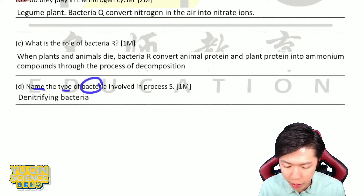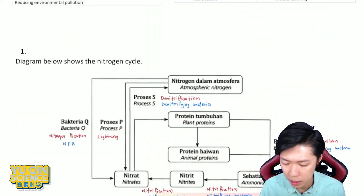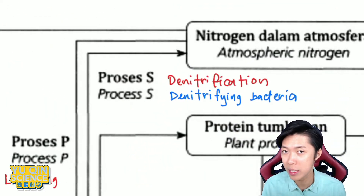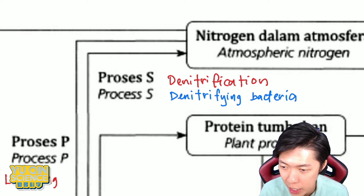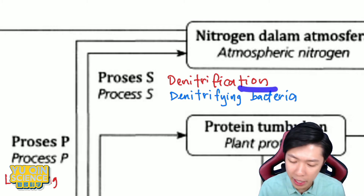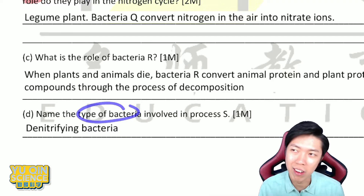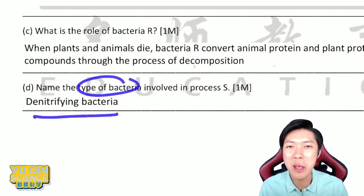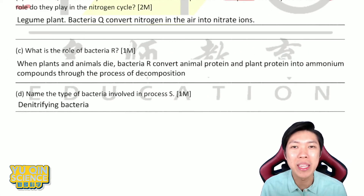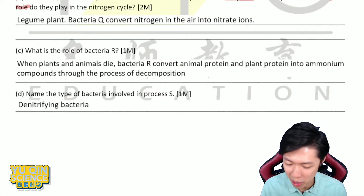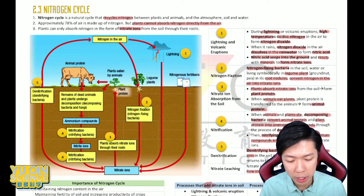For the question about decomposing bacteria: their role is to convert animal protein and plant protein into ammonium compound when animals and plants die. For question D — name the type of bacteria involved in process S (denitrification): the answer is denitrifying bacteria. You can see things are repeating — it's very straightforward. This page is everything you need, especially the summary table.